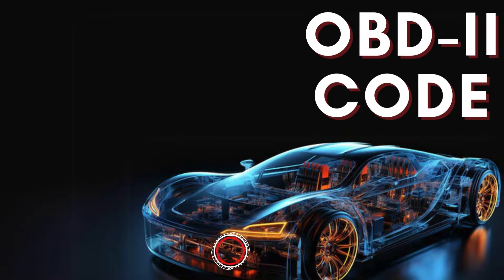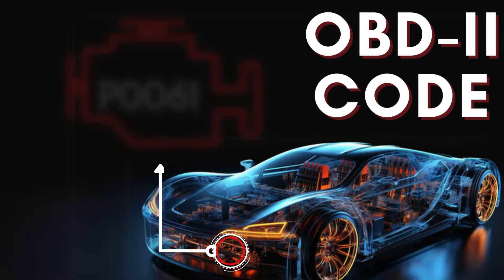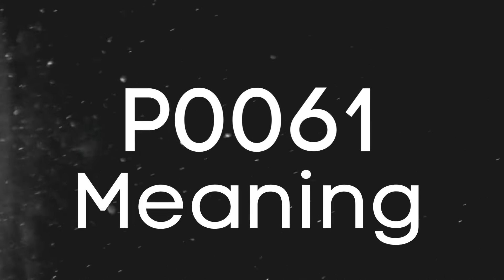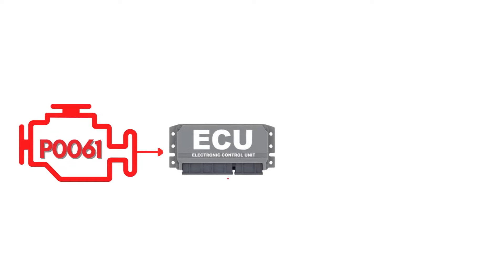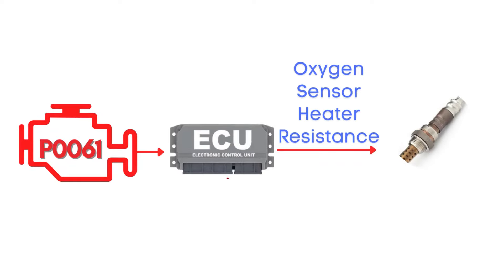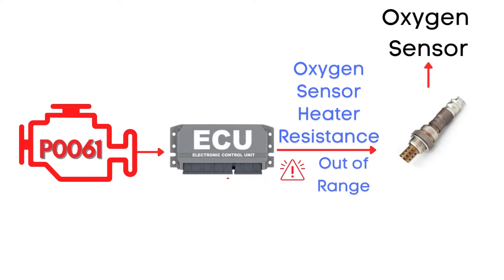In this video, we're diving into everything you need to know about OBD2 Trouble Code P0061. This code is triggered when the engine control module detects that the resistance in the oxygen sensor heater circuit isn't within the specified range.